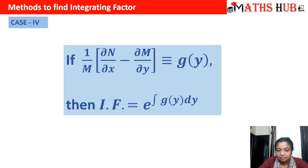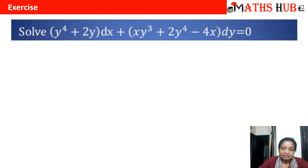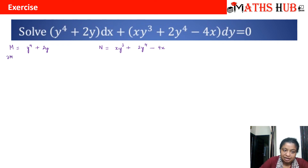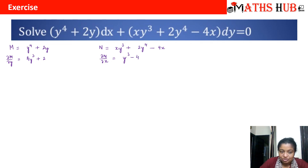Let's check out one exercise with this rule. Here M is y⁴ + 2y and N is xy³ + 2y⁴ − 4x. So ∂M/∂y is 4y³ + 2 and ∂N/∂x is y³ − 4. We can see that ∂M/∂y is not equal to ∂N/∂x.